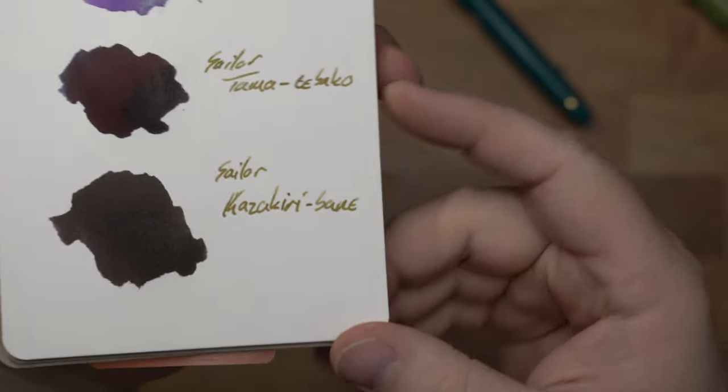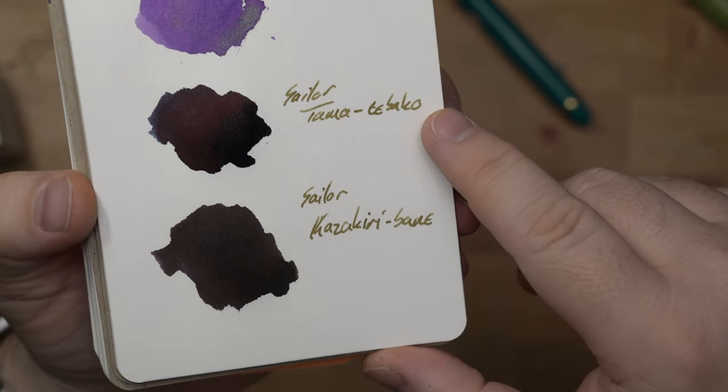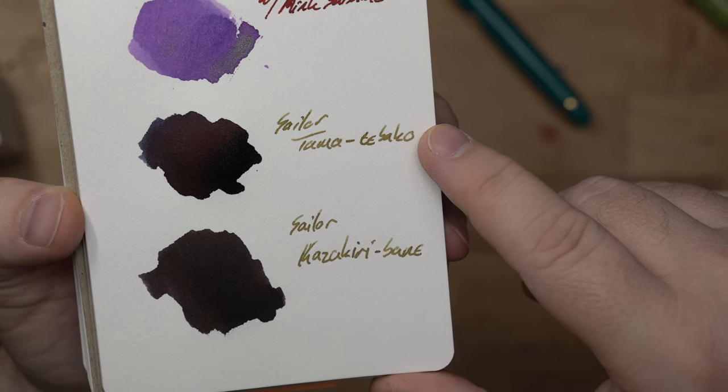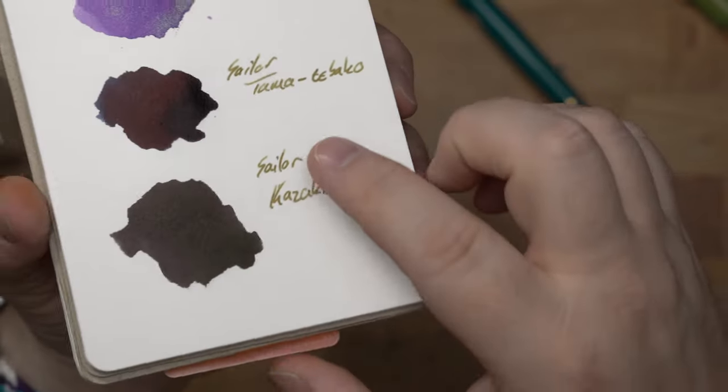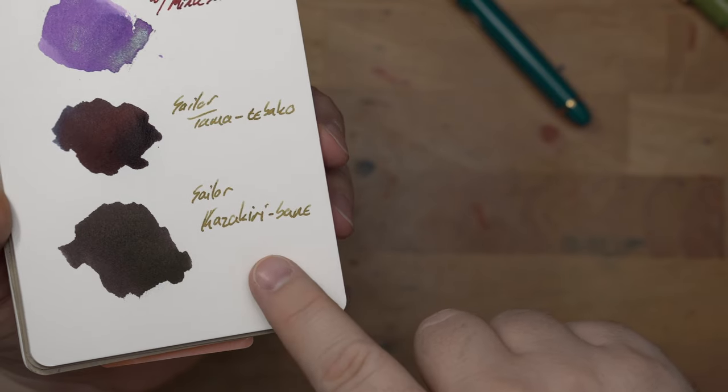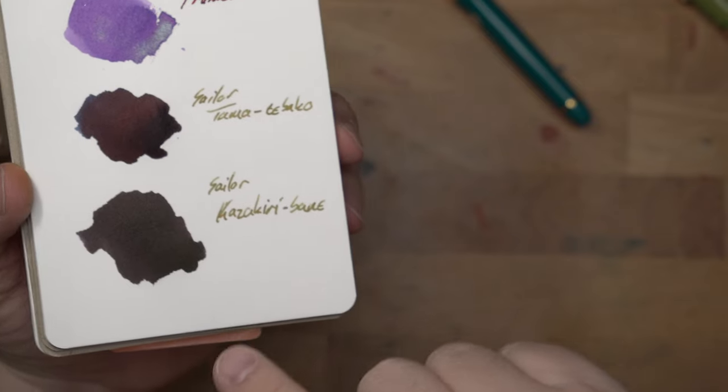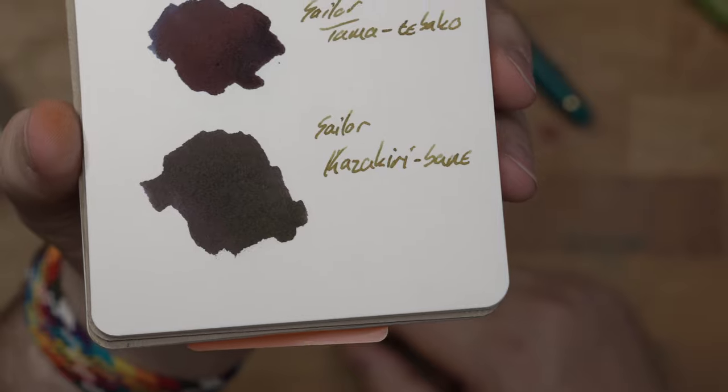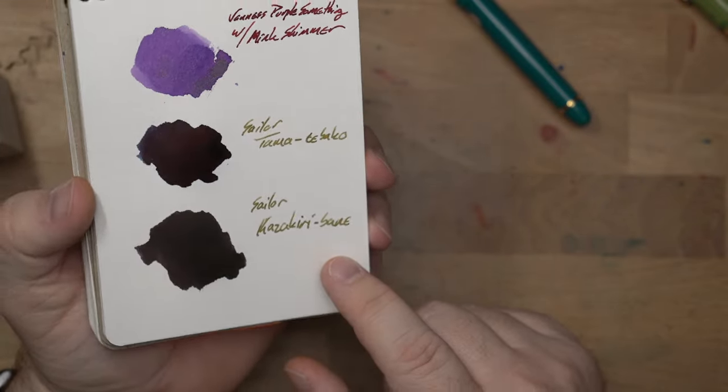Okay, pretty darn dry here. There's still a little bit of wetness going on over here, but I looked these up in the meantime. And Tama Tebako stands for Jeweled Hand Box, which is a treasure box given to Urashima Taro from the Princess of the Dragon Palace. The subdued navy reminds people of the fantasy Urashima Taro experienced underwater. Interesting. I don't know if I would call that a subdued navy. I mean you can tell it's a navy blue right over here on the corner, but there is such a lot of sheen here from the swatch. It might be more navy from a pen. I don't know.